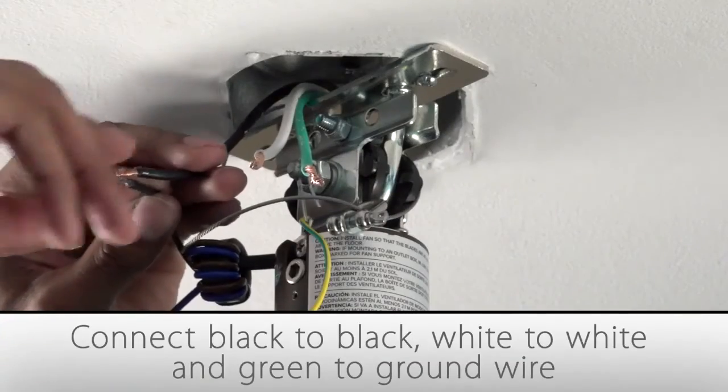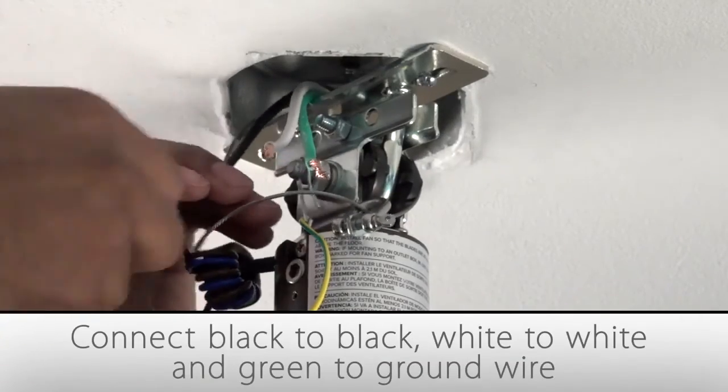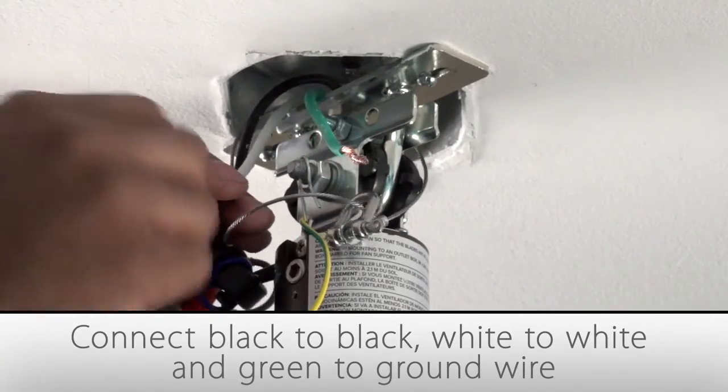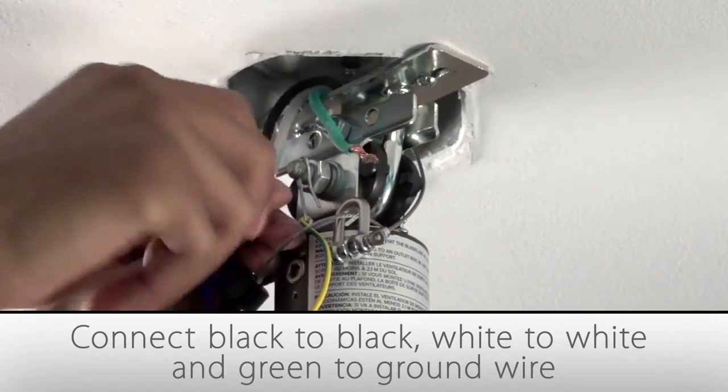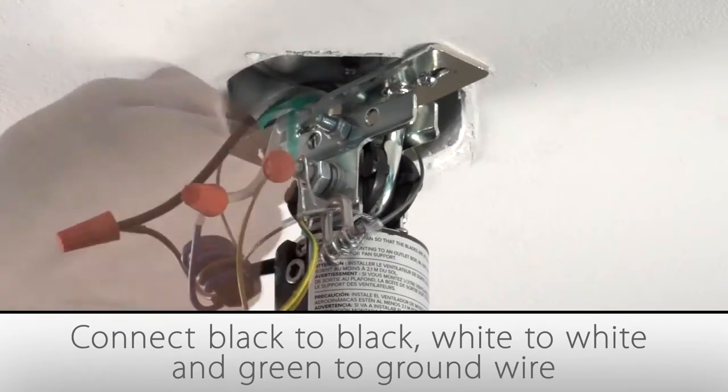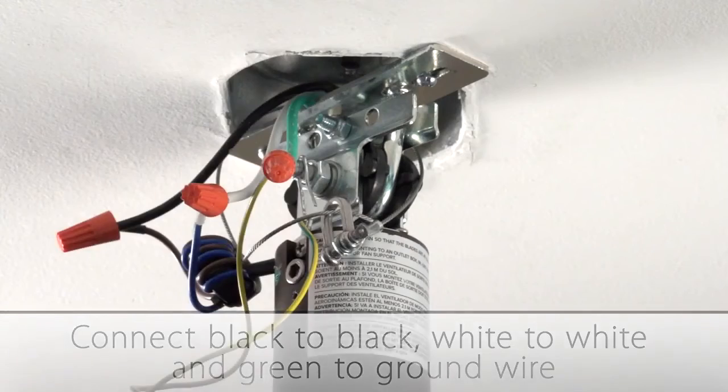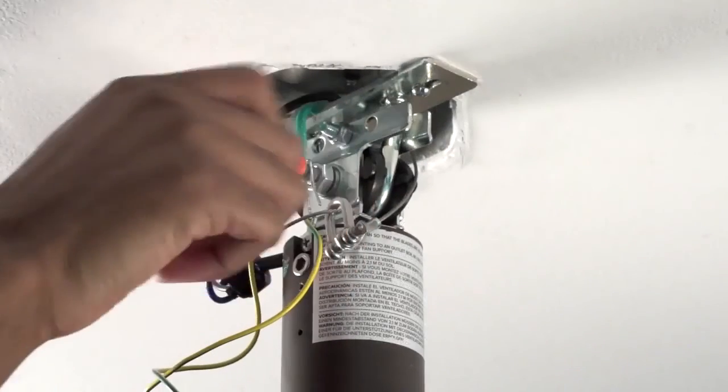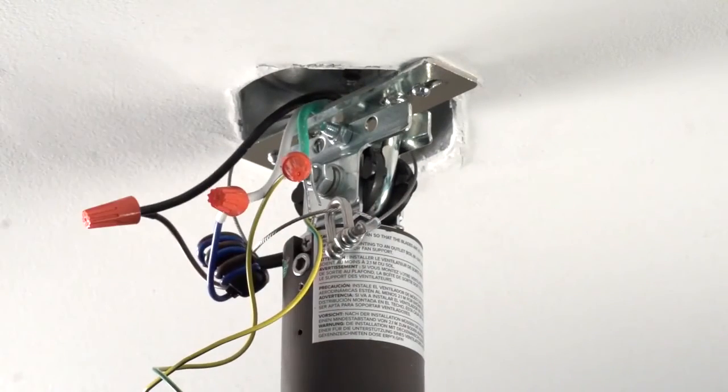Next, you will connect the fan wires to the supply wires. Twist the ends together securely and secure the connections with wire nuts. Match black wire with black wire, white with white, and the green ground wire to green or copper wire. Test the wire connections by lightly tugging on the wire nuts.